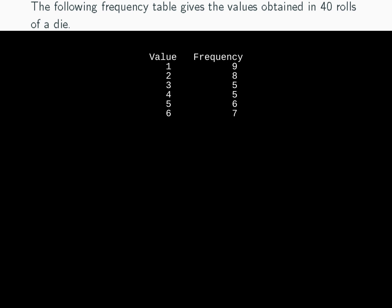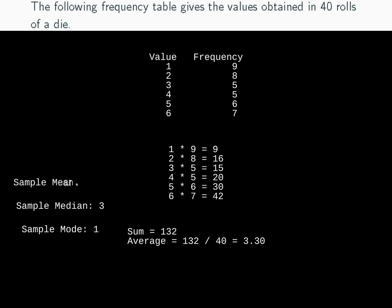This example shows values obtained in 40 rolls of a die. You have six values with their respective frequencies. To get the total number of values, you can multiply the frequency and sum them up together. The sum is 132. Average is 132 divided by 40, which equals 3.30. The sample median is 3, sample mean is 3.05, and sample mode is 1.